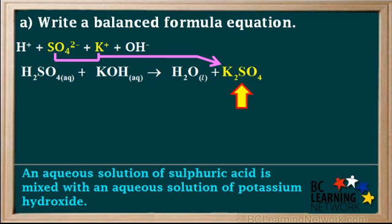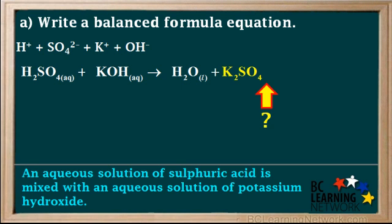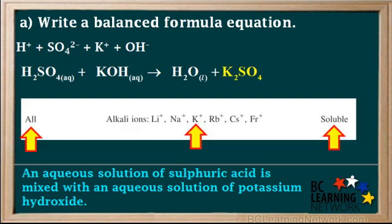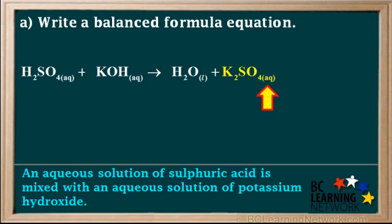Remember the positive ion is written first in the formula. So what do we write for a subscript on the K2SO4 — is it solid or aqueous? Looking up K plus on the solubility table, we see that all compounds with K plus ions are soluble. That means we write AQ here for aqueous, as the K2SO4 remains dissolved in solution.